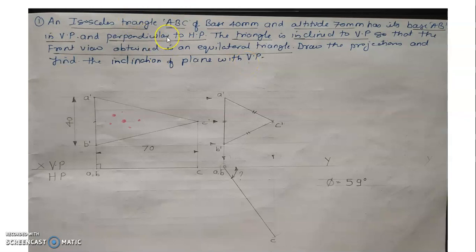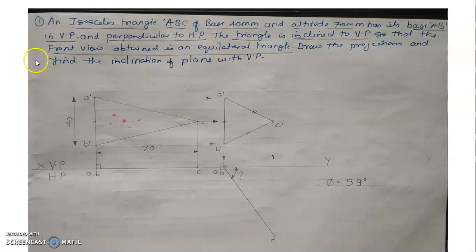After reading the problem, first find out which plane is given. The first sentence gives you the plane and the basic dimensions. The plane given is an isosceles triangle. The base is 40 mm and altitude is 70 mm. HP stands for horizontal plane and VP stands for vertical plane. The isosceles triangle with base 40 mm and altitude 70 mm has its base AB in VP and is perpendicular to HP.